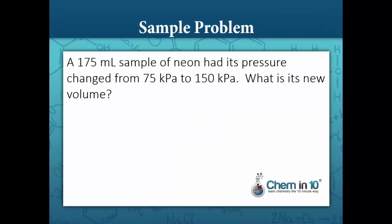Our next sample problem: a 175 milliliter sample of neon had its pressure changed from 75 kilopascals to 150 kilopascals, so its pressure has increased. What is its new volume? When we increase pressure, we would expect the volume to decrease because it's an inverse relationship. So we want to find the new volume, that's V2.